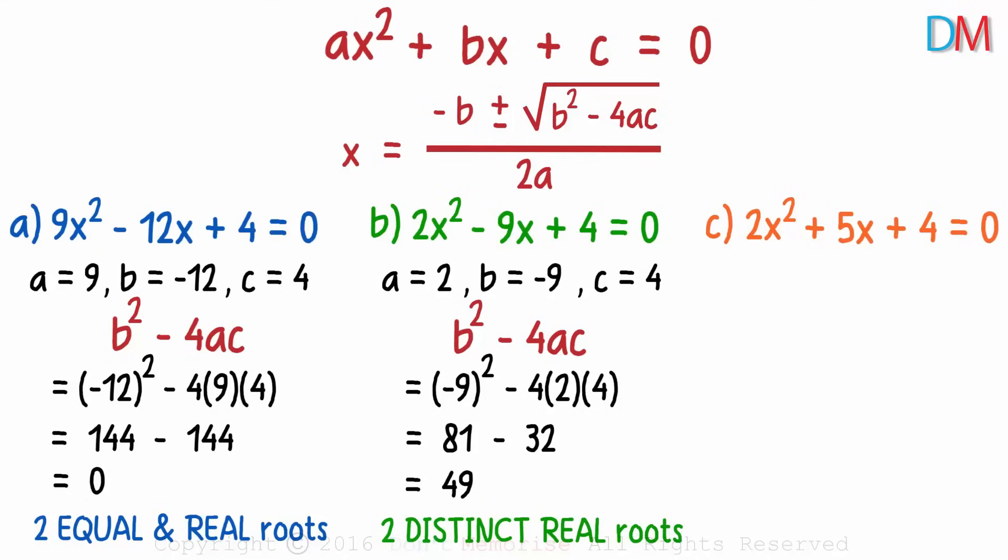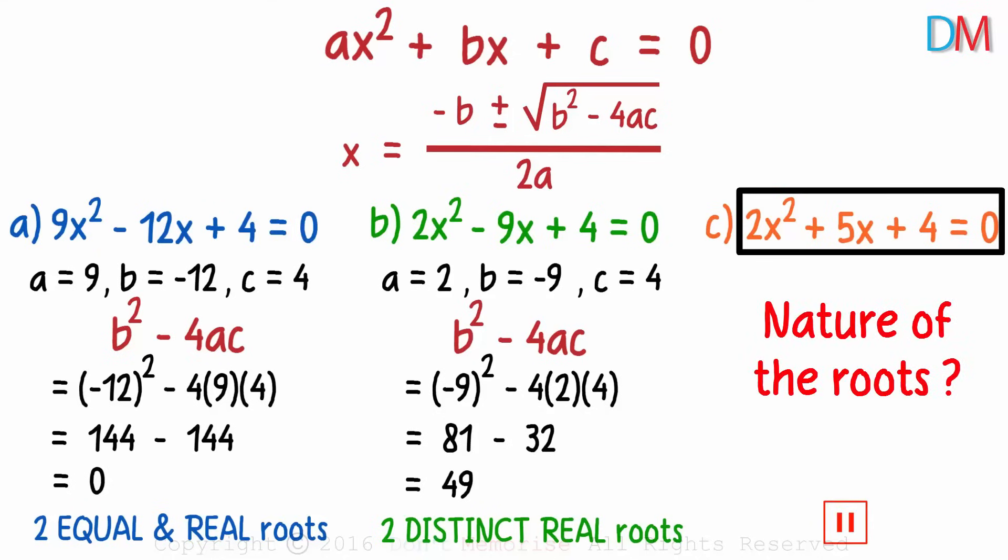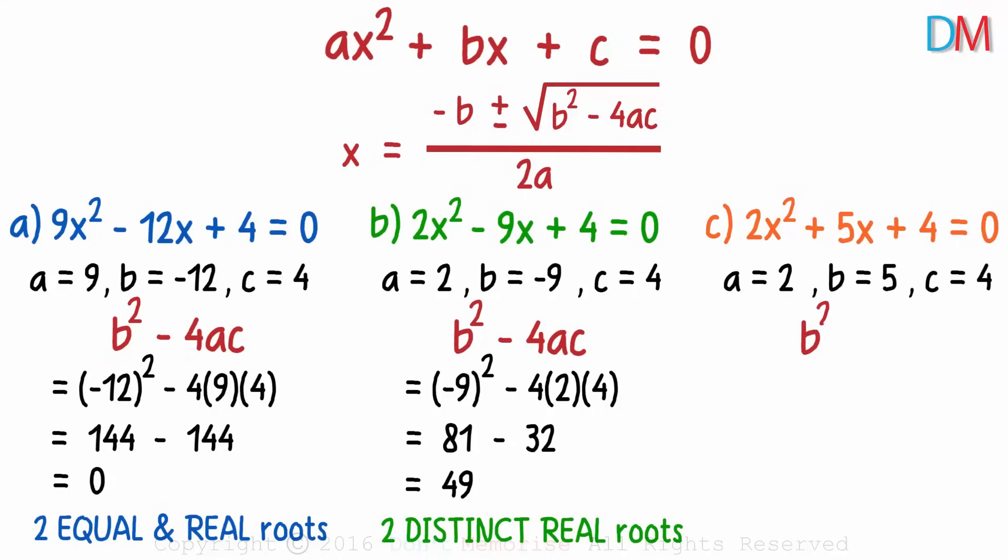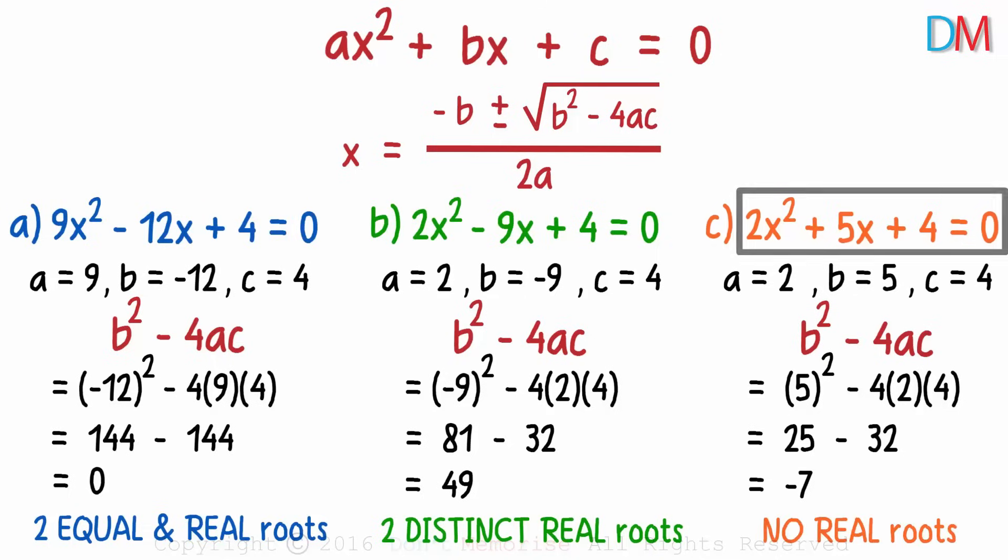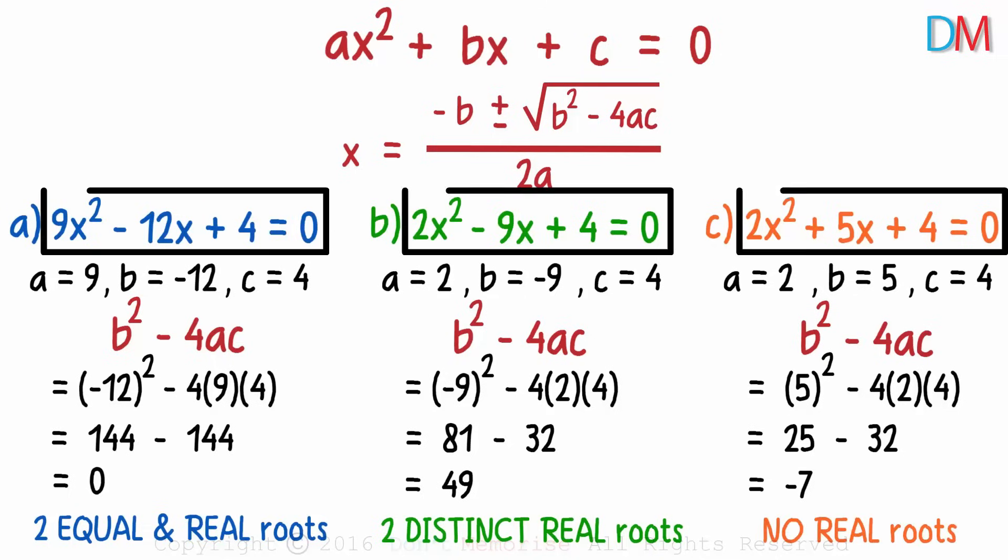And you should be able to solve the third one easily. We get the value of the discriminant as negative 7. This quadratic equation will have no real roots. You should try solving the above equations to verify your answer and it's a good chance for practice too.